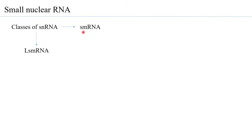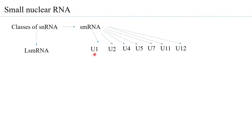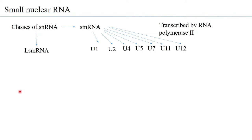These proteins are basically known as Smith's antigen, and therefore the name Sm. Under the class of Sm small nuclear RNA are U1, U2, U4, U5, U7, U11, and U12. There are also some other U-snRNAs present, U16 and U18, but their functionalities have not yet been specified under any of these classes.